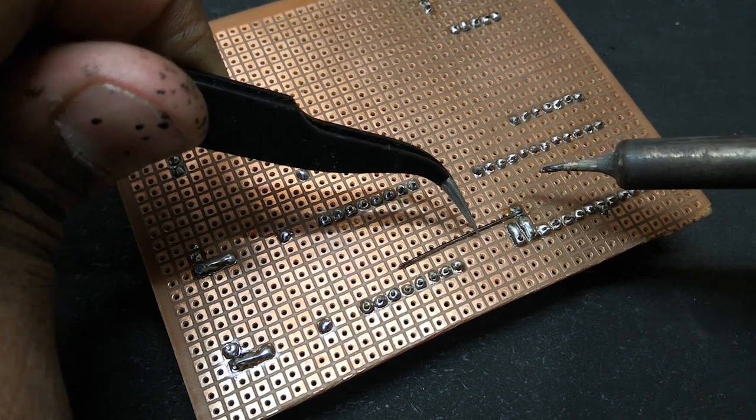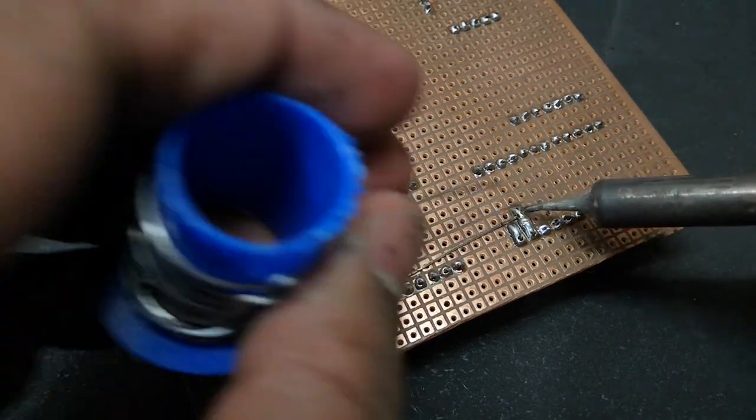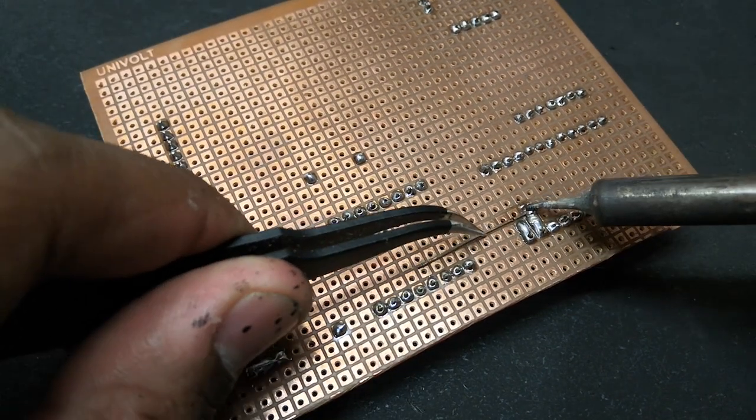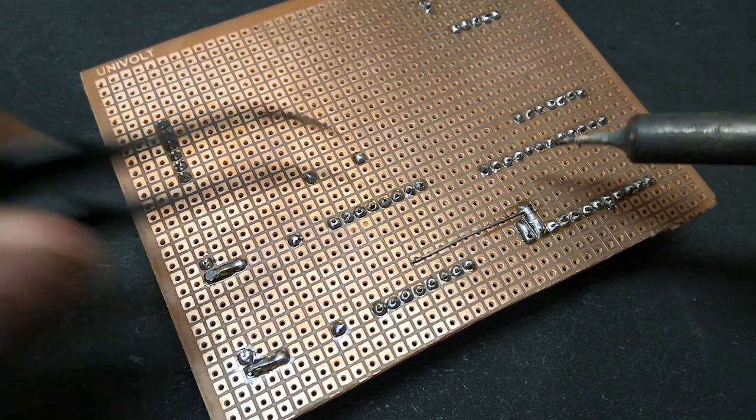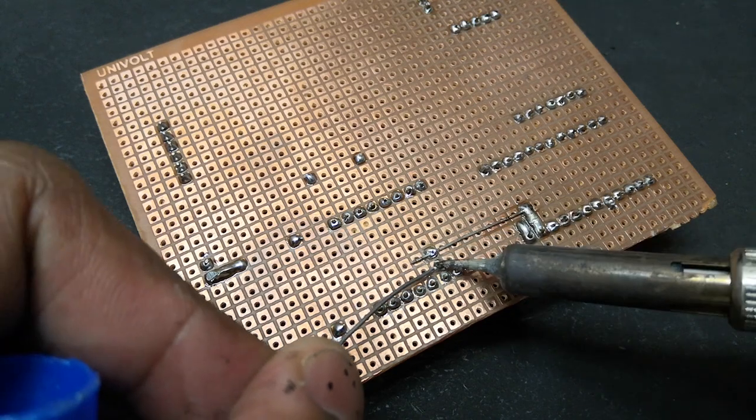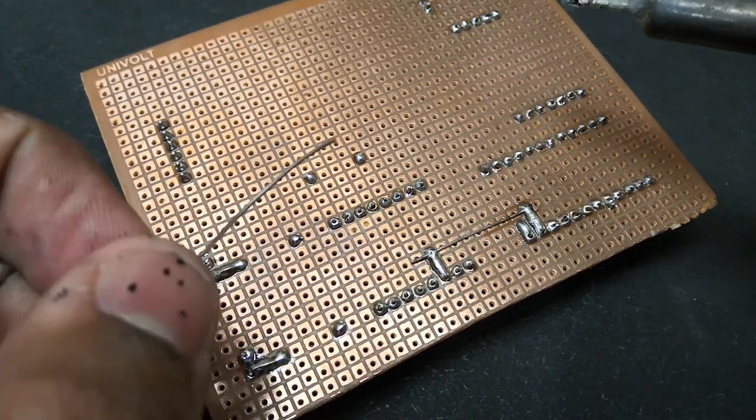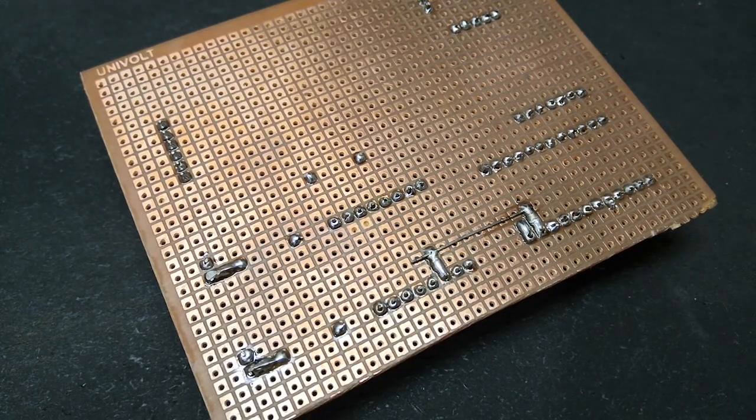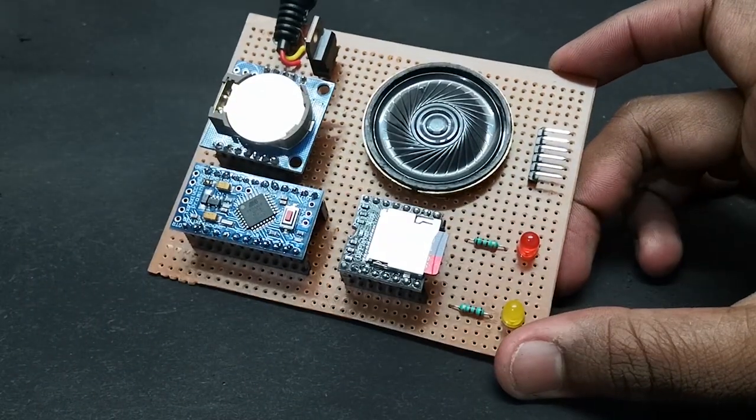The circuit is fairly simple because we're using pre-built modules. So connect the RTC to I2C bus of the Arduino Pro Mini and connect the TX and RX pin of the DF player to pin 8 and pin 9 of the Arduino. And for the servo and IR sensor to connect, we have some extra pins.